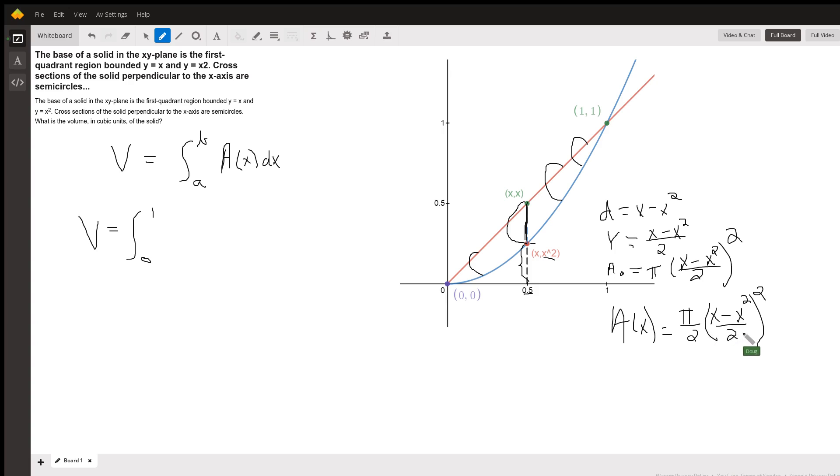We can pull a constant out. If you square this 2 down here, we get a 4 and 4 times 2 is 8. So we can put a pi over 8 out front. And then all that will be left in the integrand is x minus x squared, quantity squared, dx.